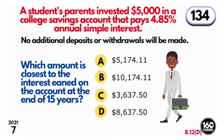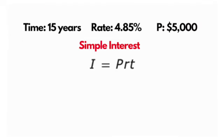So we are looking at simple interest. These are our terms: our time is 15 years, our rate is 4.85%, and our principle, which we represent by P, equals $5,000.